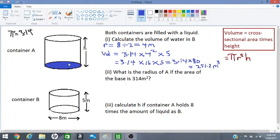The base is a circle and the area is 314 meters squared. So we have to use the formula for area of a circle which is pi r squared. Pi r squared is equal to 314. We know that pi is 3.14, so this would be 3.14 r squared equals 314.